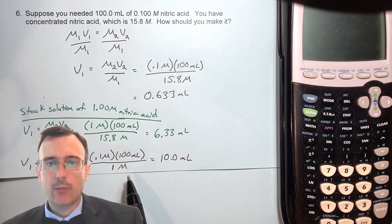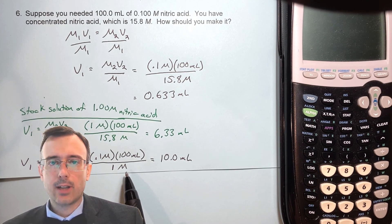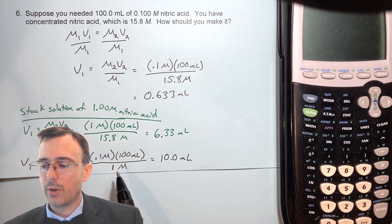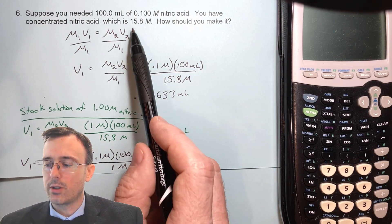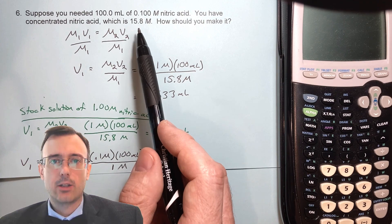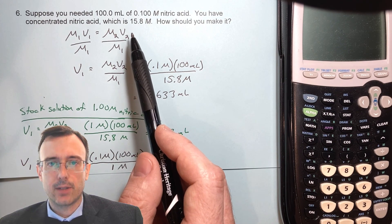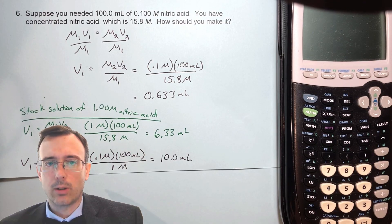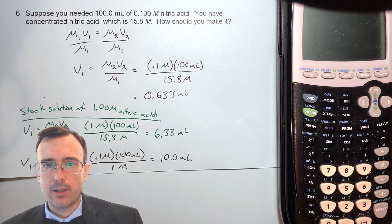Then take that stock solution and put 10 milliliters of it into another 100 milliliter volumetric flask. Add distilled water up to the 100 milliliter mark, and you now have 100 milliliters of 0.1 molar nitric acid — exactly what you wanted. Oftentimes, when you want to make a highly dilute solution from a highly concentrated one, you'll need a series of dilutions, sometimes two or even more. Have a great rest of your day — stay curious.